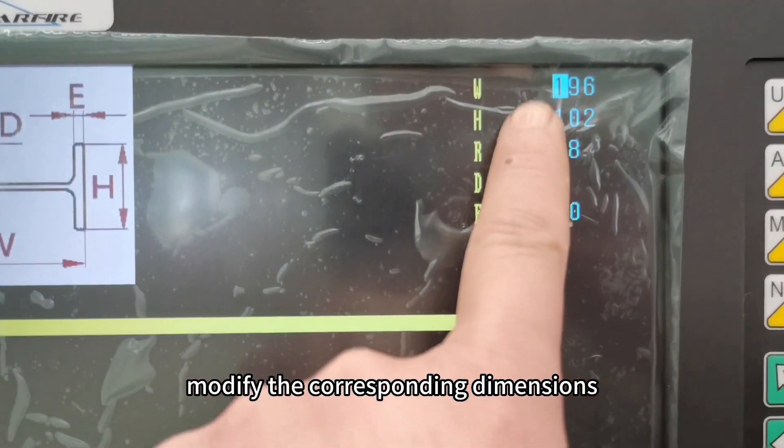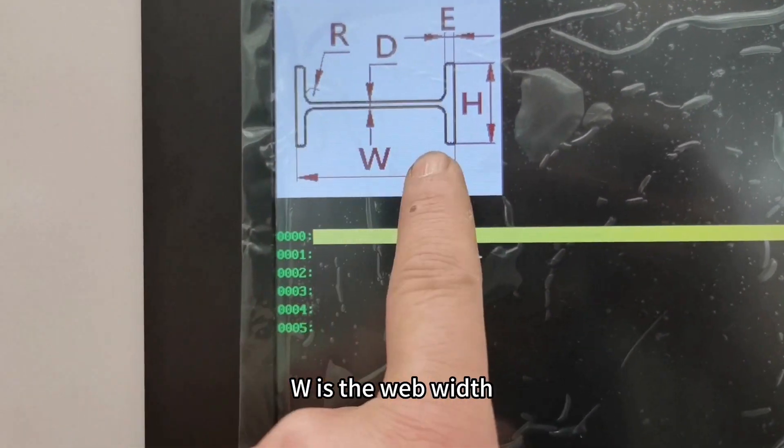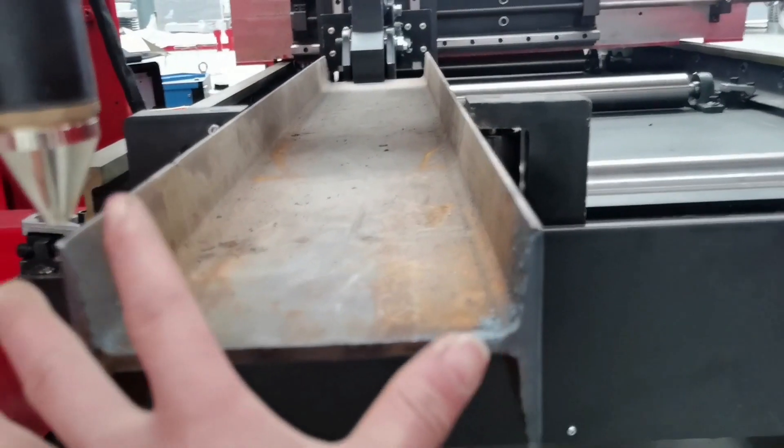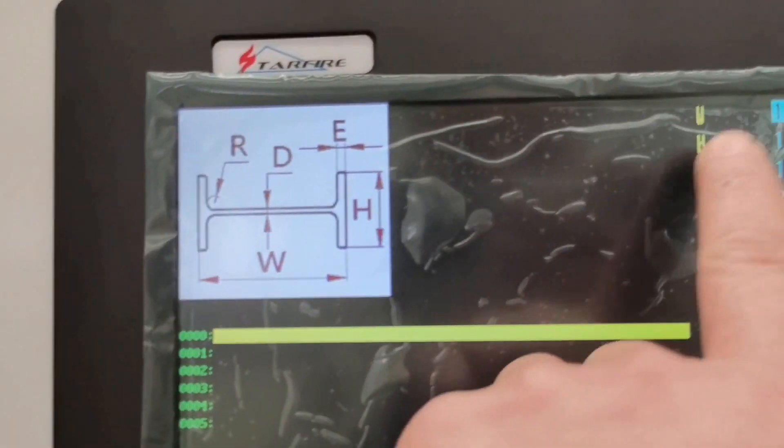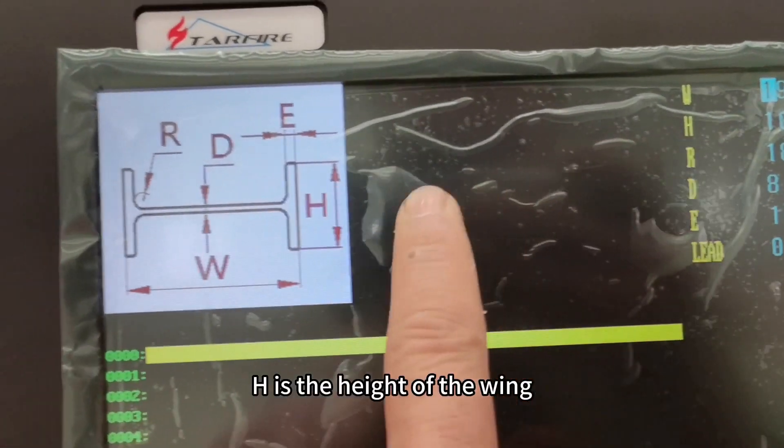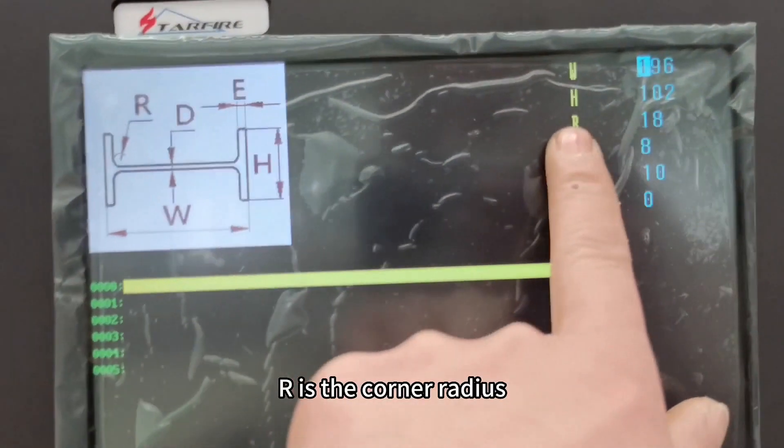Modify the corresponding dimensions. W is the web width. H is the height of the wing. R is the corner radius.